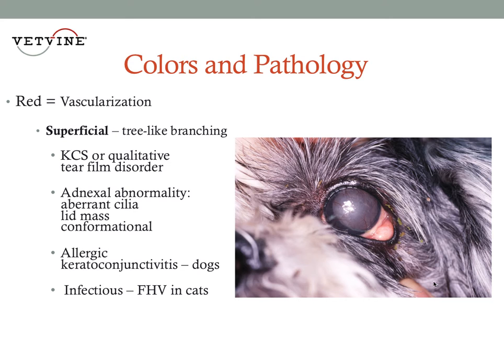When we see superficial corneal vascularization in a patient, there are certain things that should come to mind as potential rule-outs for that inflammatory response. The first is a qualitative or quantitative tear film disorder like keratoconjunctivitis sicca. A dry eye will become inflamed, and we can see superficial vascularization.